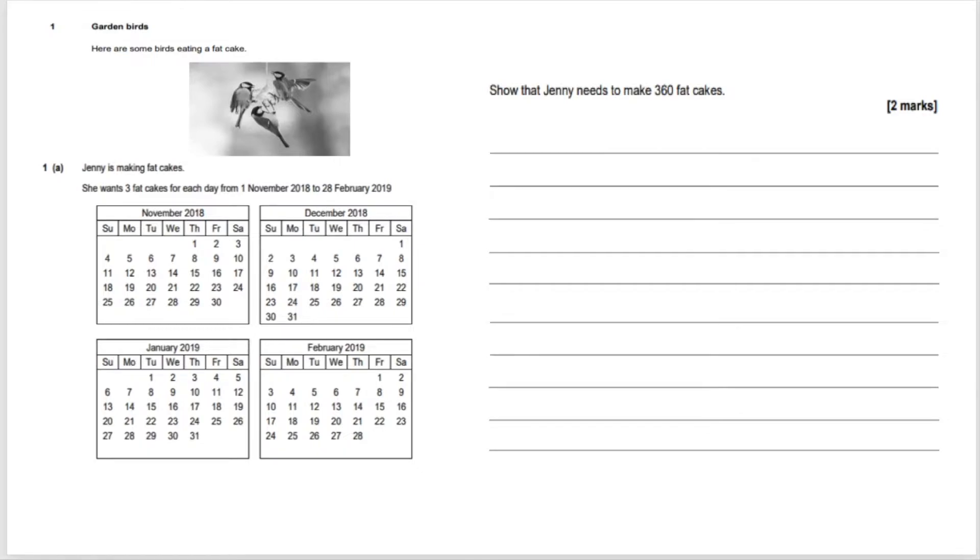So first of all, let's add up all the days in the month. In November there are 30 days, in December there are 31, in January there are 31, and in February there are 28. So it will be 30 plus 31 plus another 31 plus 28.